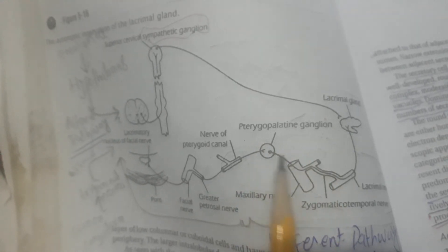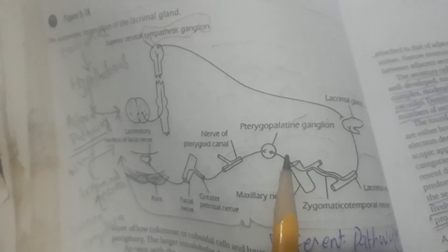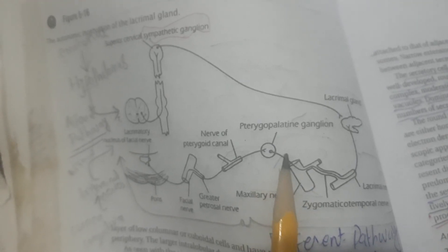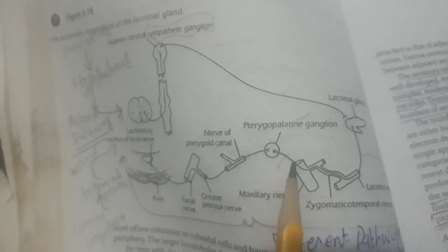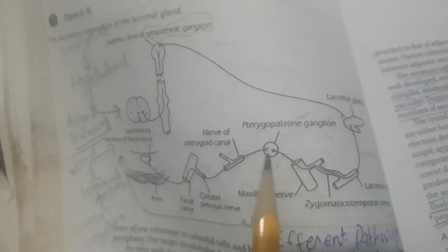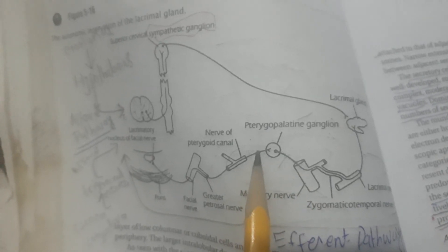After synapsing, postganglionic fibers are formed. These are the postganglionic fibers, distinct from the preganglionic fibers described earlier.